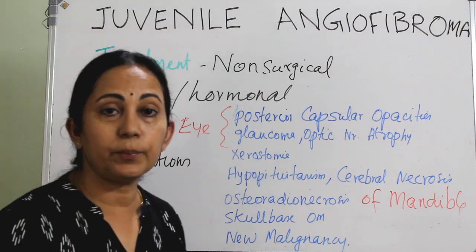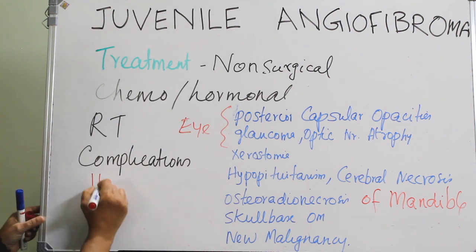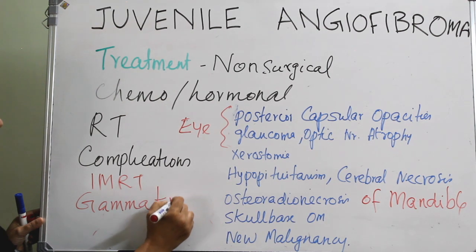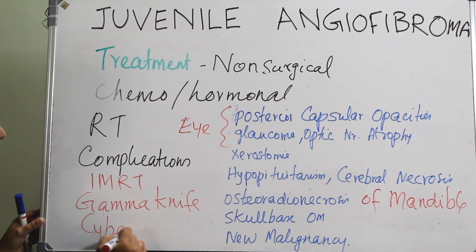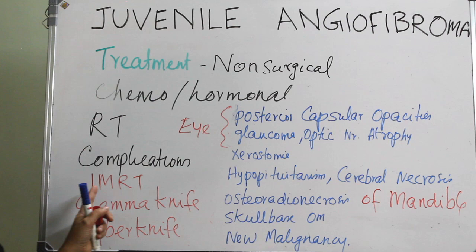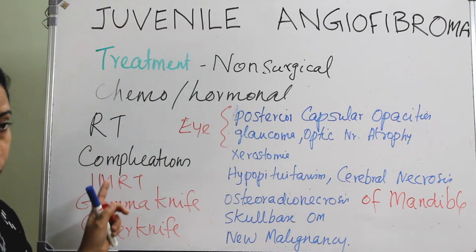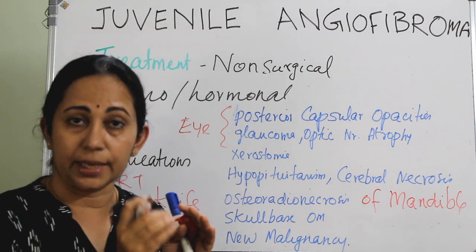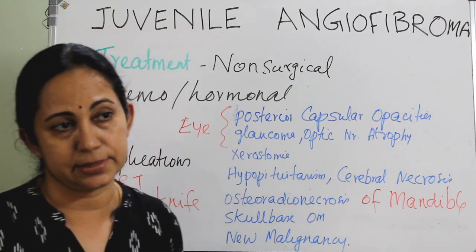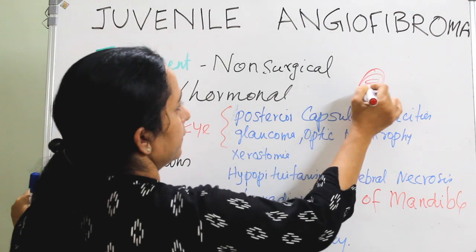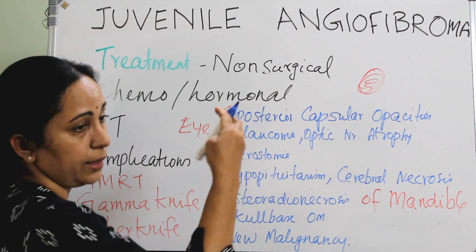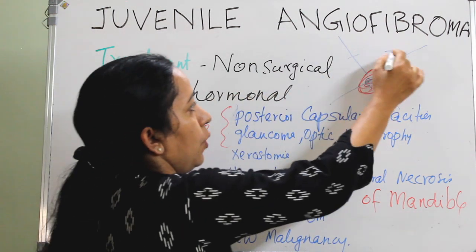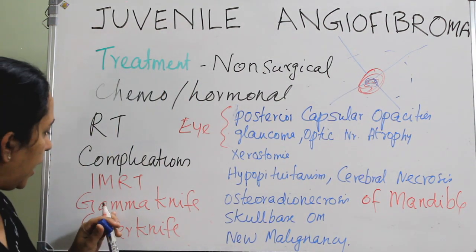There are newer, less complicated modalities of radiation. One is intensity modulated radiation therapy — IMRT — or it can be a gamma knife, or it can be a cyber knife. In IMRT, a high dose of radiation is given to that particular target area with sparing of surrounding vital structures. High-intensity beams come from many areas and converge on the tumor tissue while sparing all neighboring vital structures.